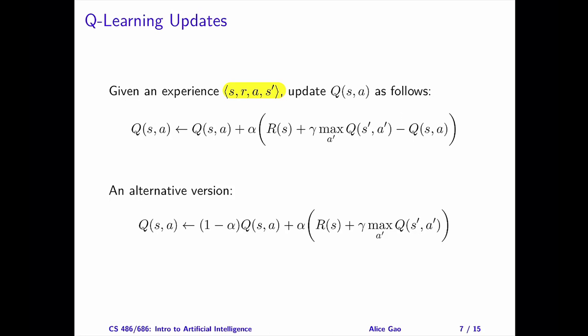Take the original Q value and add a portion of the temporal difference error. The temporal difference error is equal to the predicted Q value minus the current Q value. The predicted Q value is the immediate reward of entering state S plus the discounted expected utility of taking the best action in the next state S'.